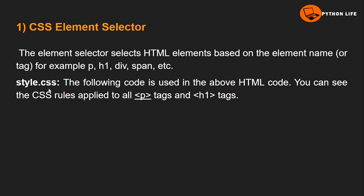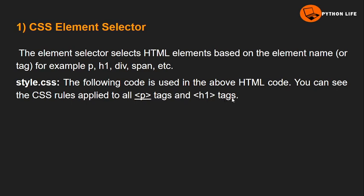CSS rules are applied to all matching elements. For example, if 'p' is given a color, that color will apply to all paragraph tags. If h1 tags are given a background color, that will apply to all h1 tags. So with the help of the element or tag name, we apply style — that is the element selector.